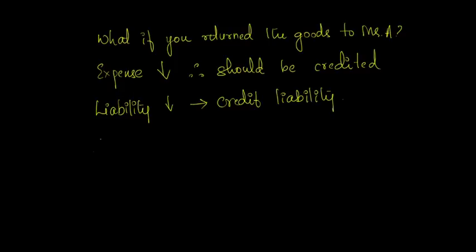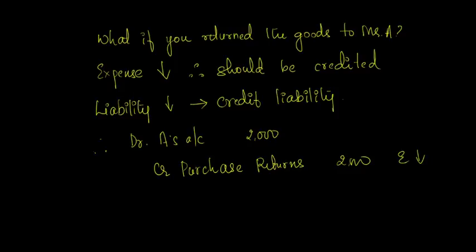Likewise, even the liability would have come down because the amount owed to Mr. A will also be less now on account of returned goods. In that case, the journal entry would be: debit A's account because there is decrease in liability, and credit purchase returns. Instead of crediting purchase to identify the returns, we will credit purchase returns account, which in effect is nothing but decrease in expenditure.